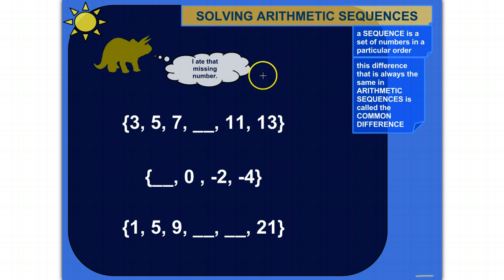First of all, a sequence is a set of numbers in a particular order, so 2, 4, 6 are in order, they're getting bigger.